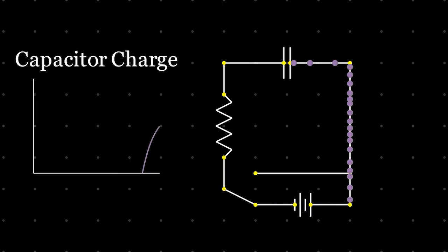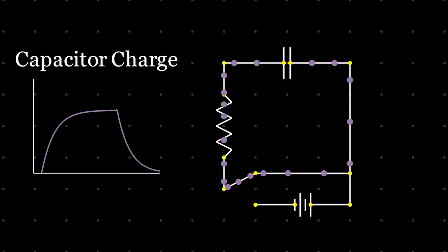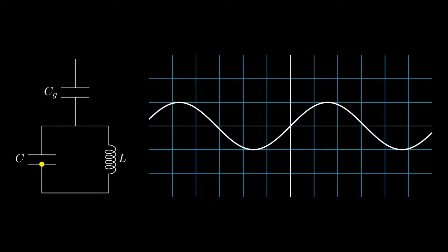And C is a capacitor, two parallel plates connected by a wire which can store electrical energy in the form of charges building up on one of the plates. Now, if we go back to the LC oscillator, if we write down the equation for current as a function of time, we can see the same characteristic equation of simple harmonic motion that we saw before.